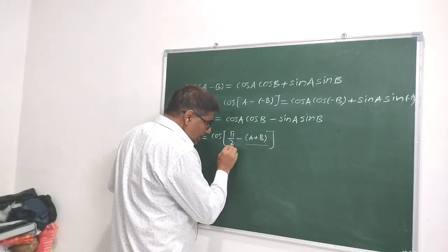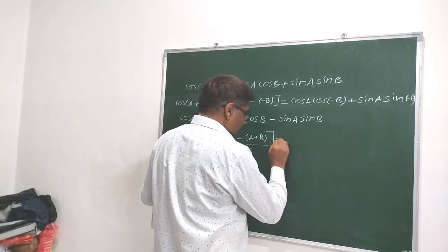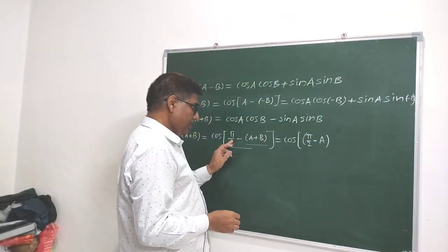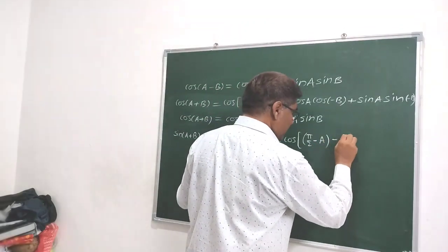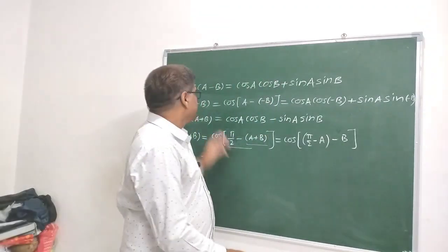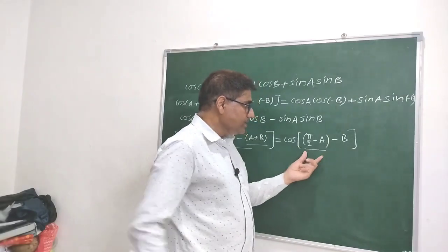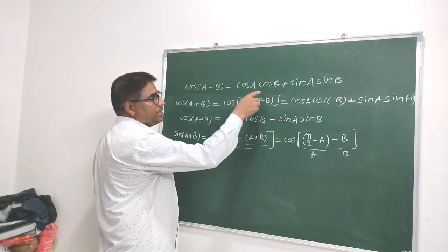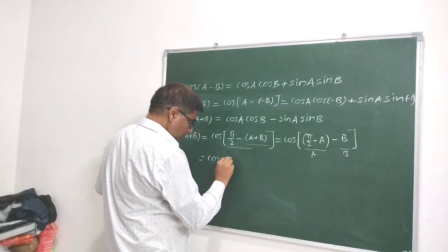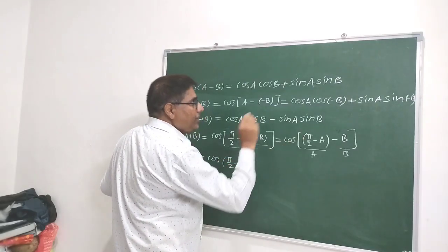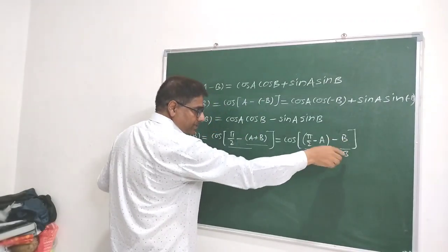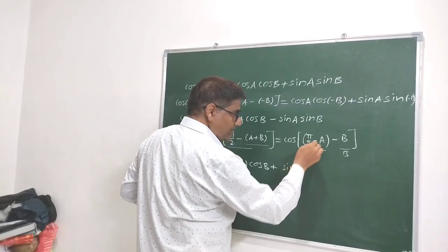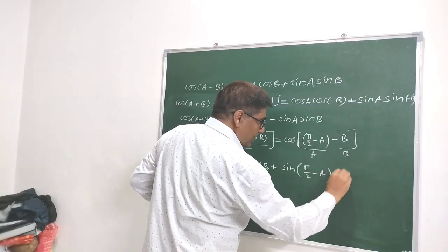Now let us group π/2 and A together and keep B separately. We can write this as cos((π/2 - A) - B). Here we can apply the cos(A-B) formula, treating (π/2 - A) as the first angle and B as the second angle. Expanding: cos(π/2 - A) · cos B + sin(π/2 - A) · sin B.